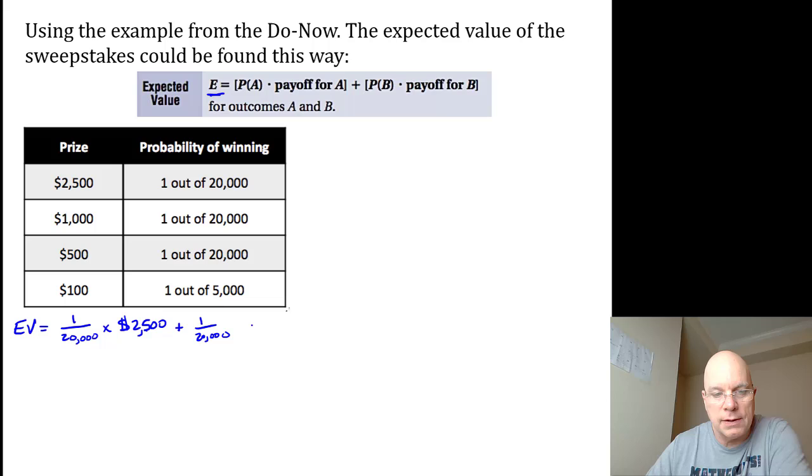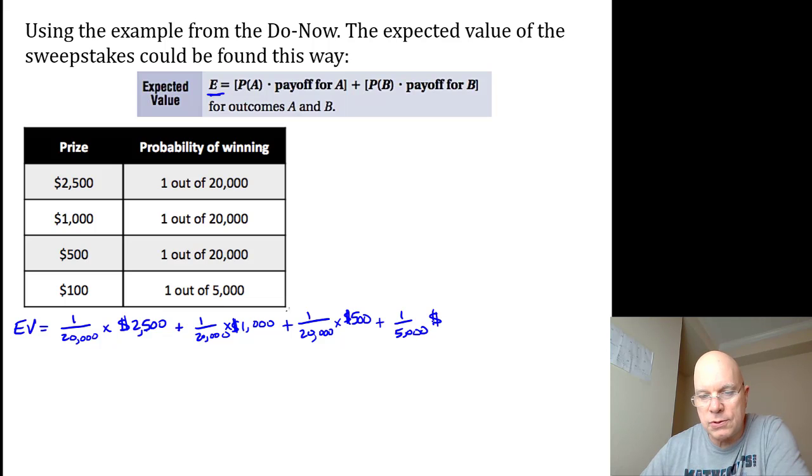Plus the probability of some other thing occurring, a 1 out of 20,000 chance of winning the $1,000 prize, and you also have a 1 out of 20,000 chance of winning the $500 prize.